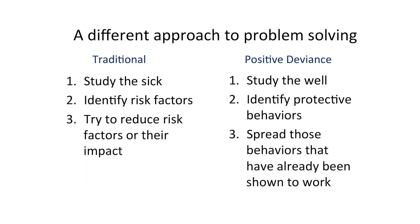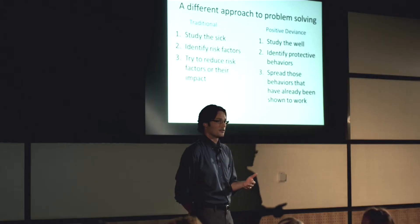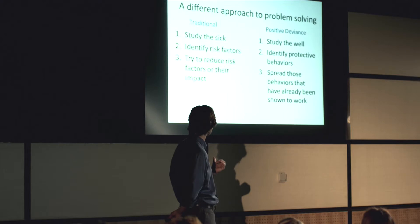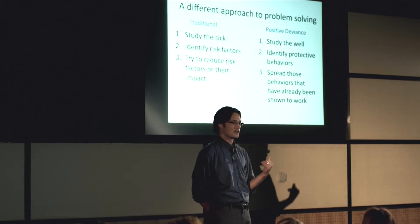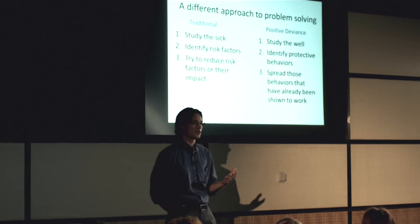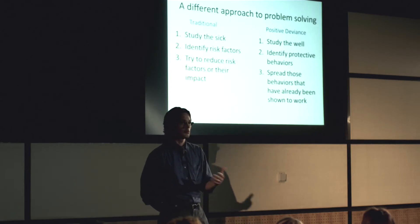To contrast the two: in the traditional model, we study the sick. In applying positive deviance, we study the well. In the traditional model, we identify risk factors for progressing in or getting the disease. In this case, we identify protective behaviors. We try to reduce risk factors or their impact on the patient in the traditional model. In positive deviance, after identifying the behaviors, we try and spread the behaviors that have already been shown to work.